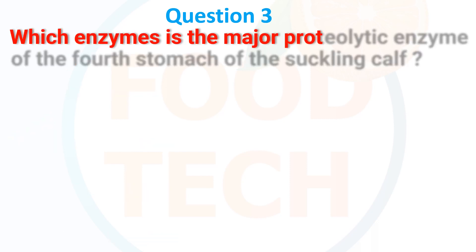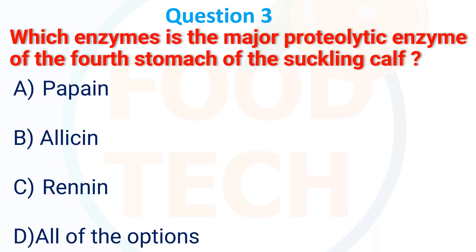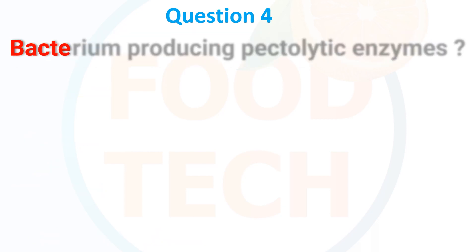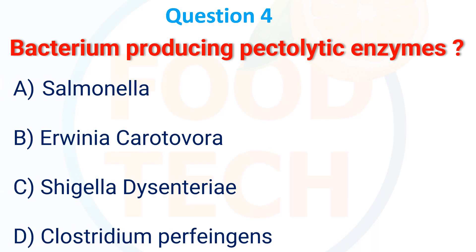Which enzyme is the major proteolytic enzyme of the four stomachs of a suckling calf? A. Pepsin, B. Allicin, C. Renin, D. all of the options. The answer is C, Renin.